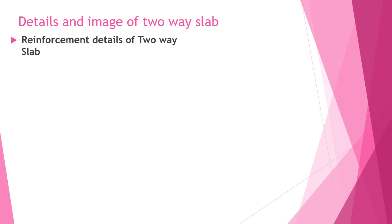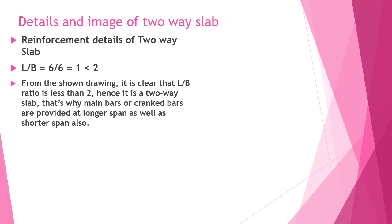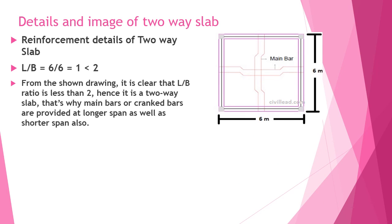Reinforcement details of two-way slab: for a 6-meter by 6-meter slab, length divided by breadth equals 1, which is less than 2. From the drawing it is clear that the length-to-breadth ratio is less than 2, hence it is a two-way slab. That is why main bars and cranked bars are provided in both the longer span and the shorter span.